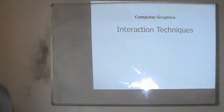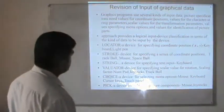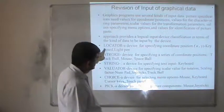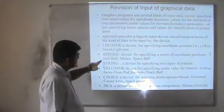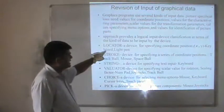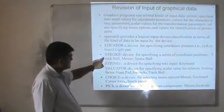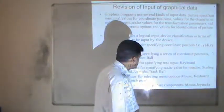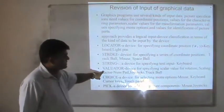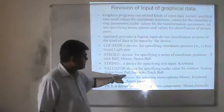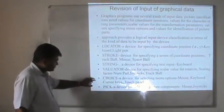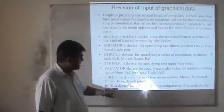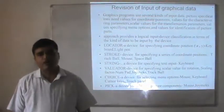Now we can revisit the interaction techniques. The six types of logical input devices are: Locator — specifying coordinate positions x and y, using devices like mouse, trackball, or space ball; Stroke — specifying a series of coordinate positions, using similar devices; String — specifying text input, using keyboards; Valuator — specifying scalar values for rotation and scaling, using numerical pads and joysticks; Choice — selecting menu options, using mouse, keyboard, or touch; and Pick — selecting picture components or regions of interest, using mouse and joysticks.